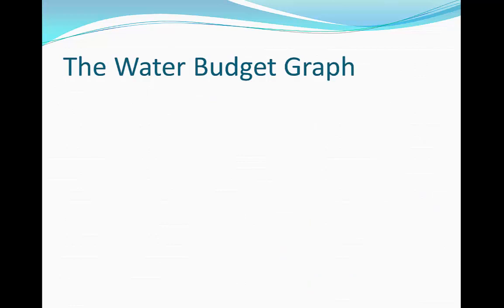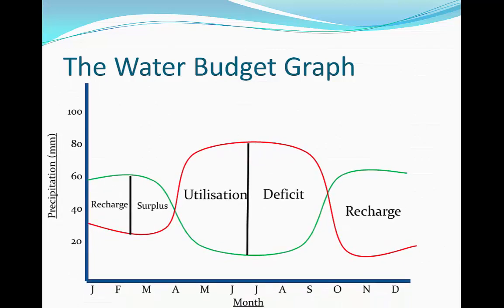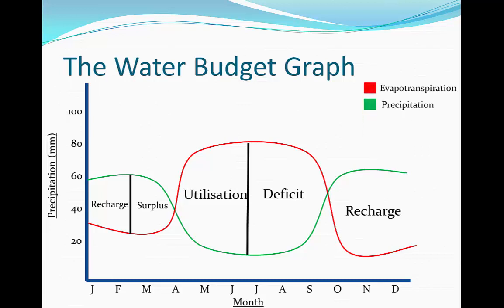So how is this shown on a graph? We use something called the water budget graph. On the x-axis we have the time in months and on the y-axis we have the levels of precipitation. The green line on the graph shows levels of evapotranspiration.